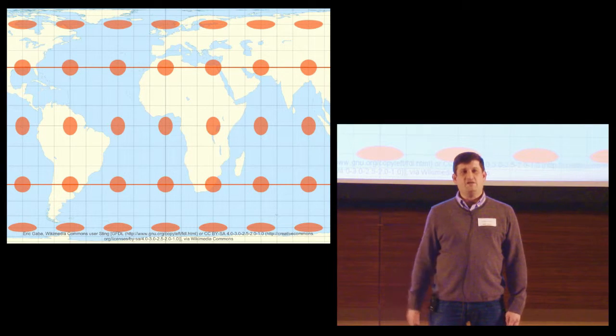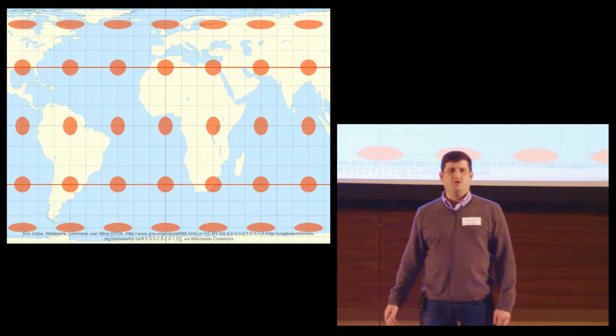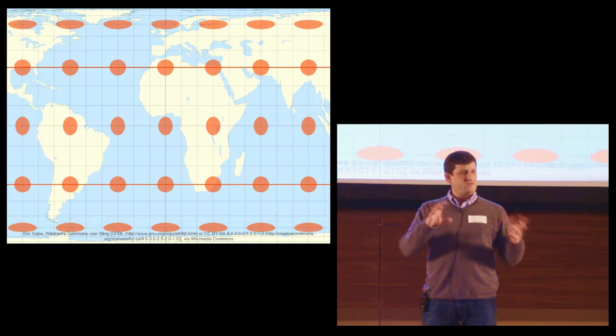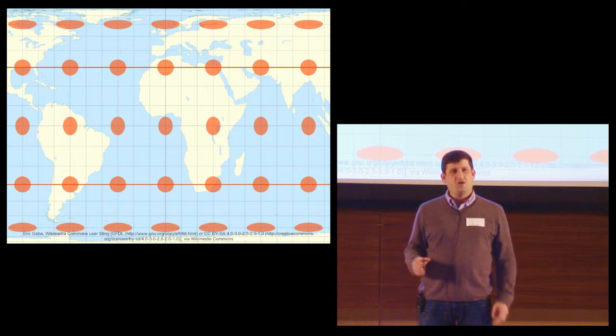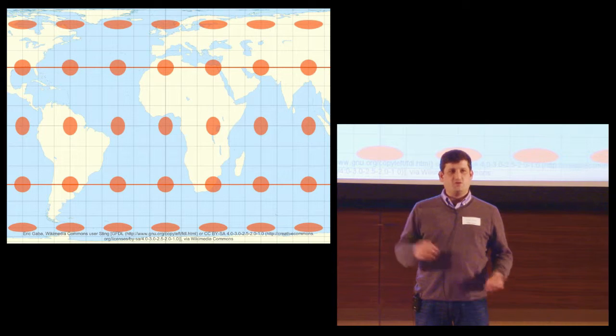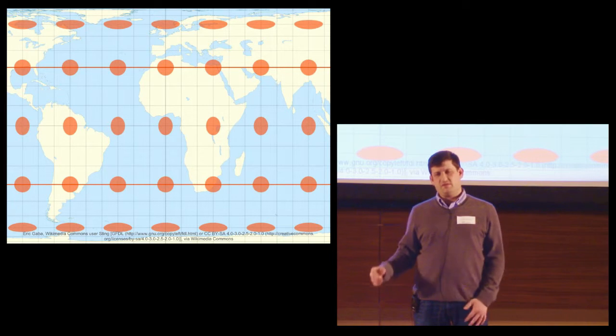In 1859, Tissot came up with a clever way to show the distortion of maps. Imagine that the surface of the Earth is covered with perfect circles. When you do your projection, the circles will go bigger or smaller, or get stretched out into ellipses.